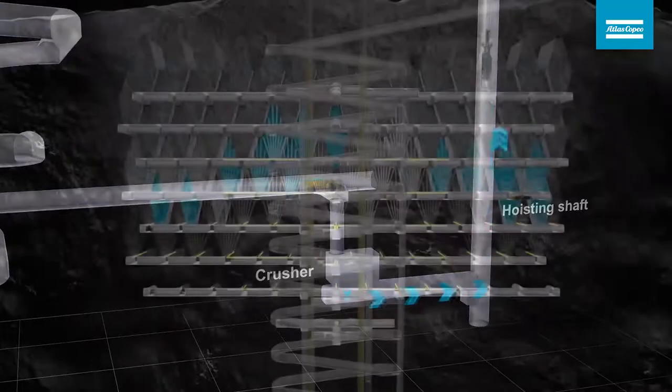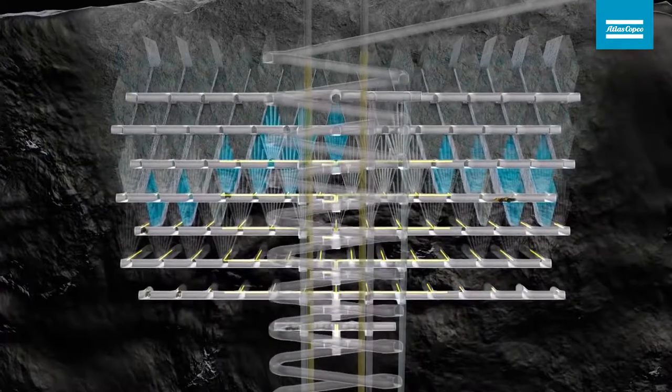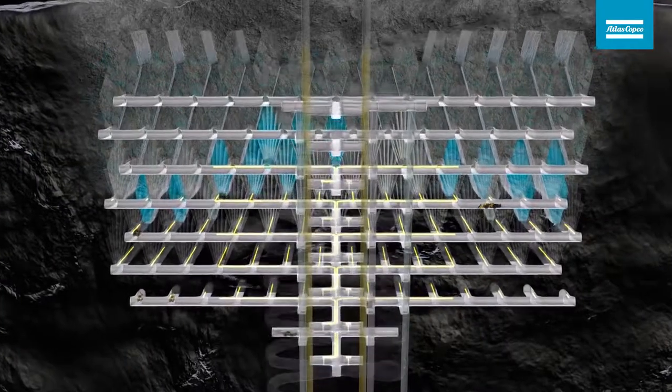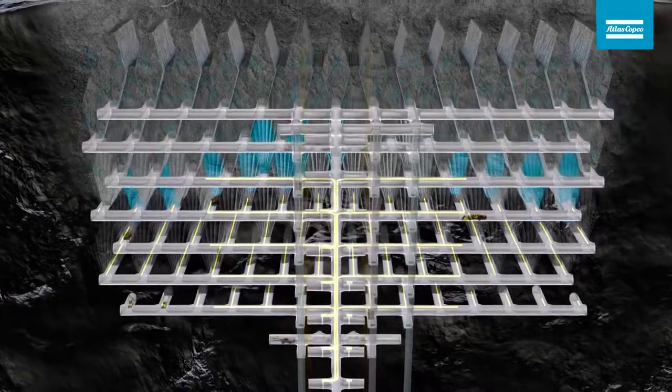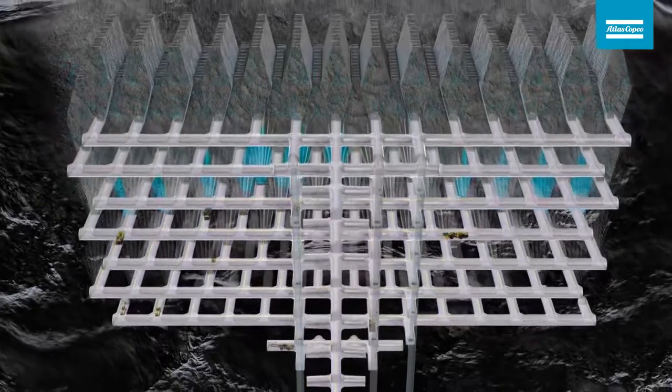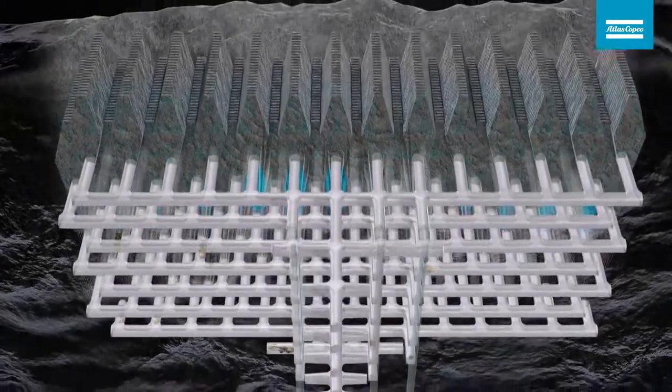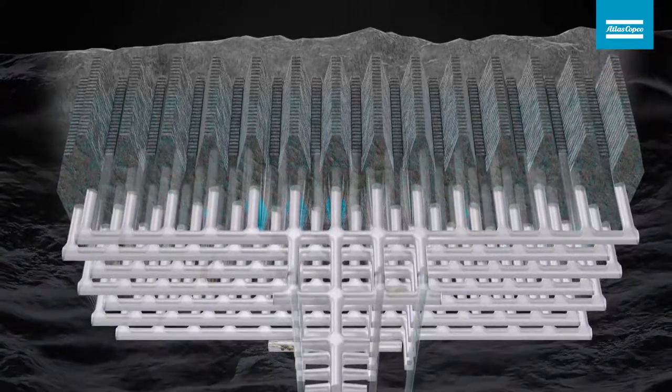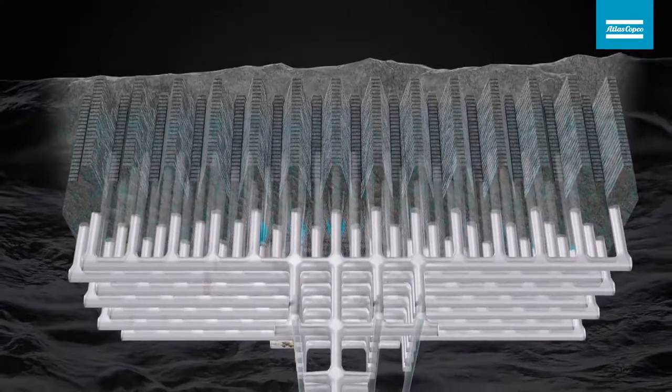Each sublevel features a systematic layout with drifts across the ore body. Activities in the parallel production drifts are performed simultaneously in order to maintain a good process in the mine.